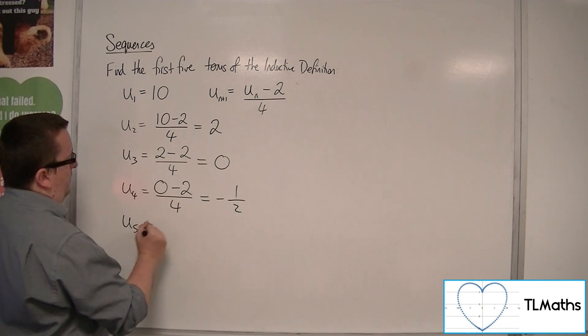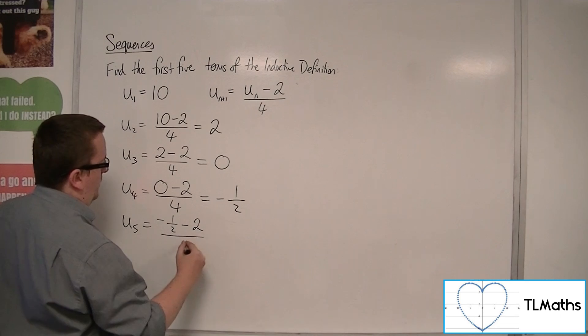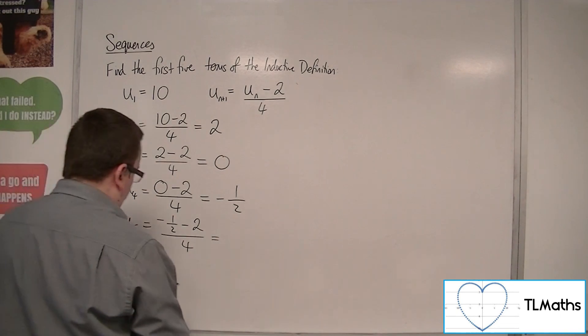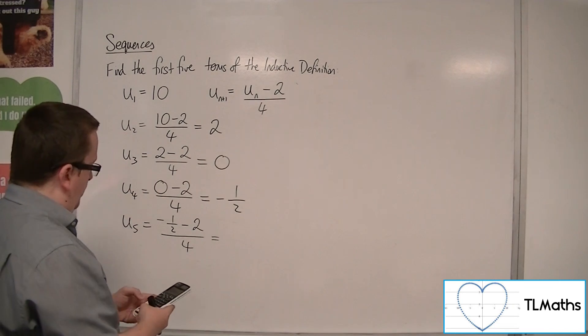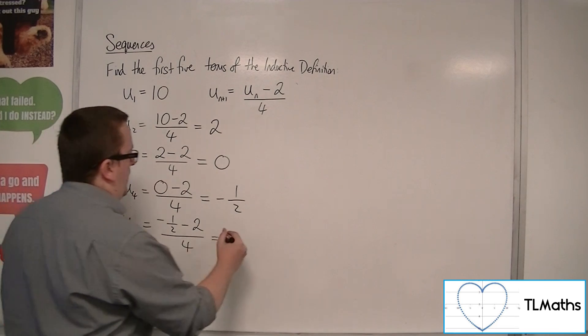Then u5 will be minus a half, take away 2, divided by 4. So what are we going to have there? So minus a half, take away 2, divided by 4, is minus 5 eighths.